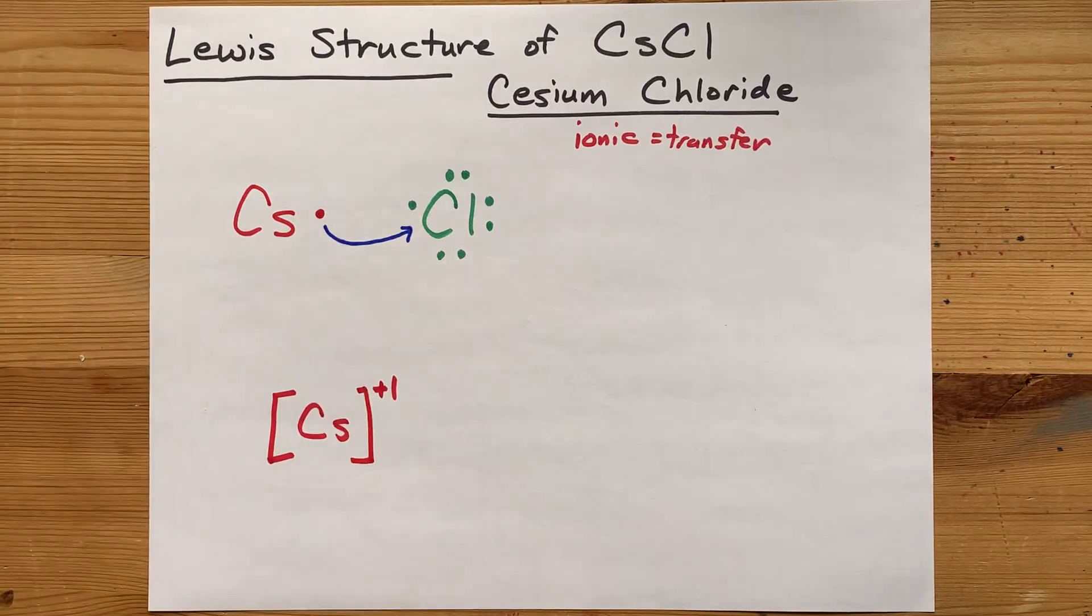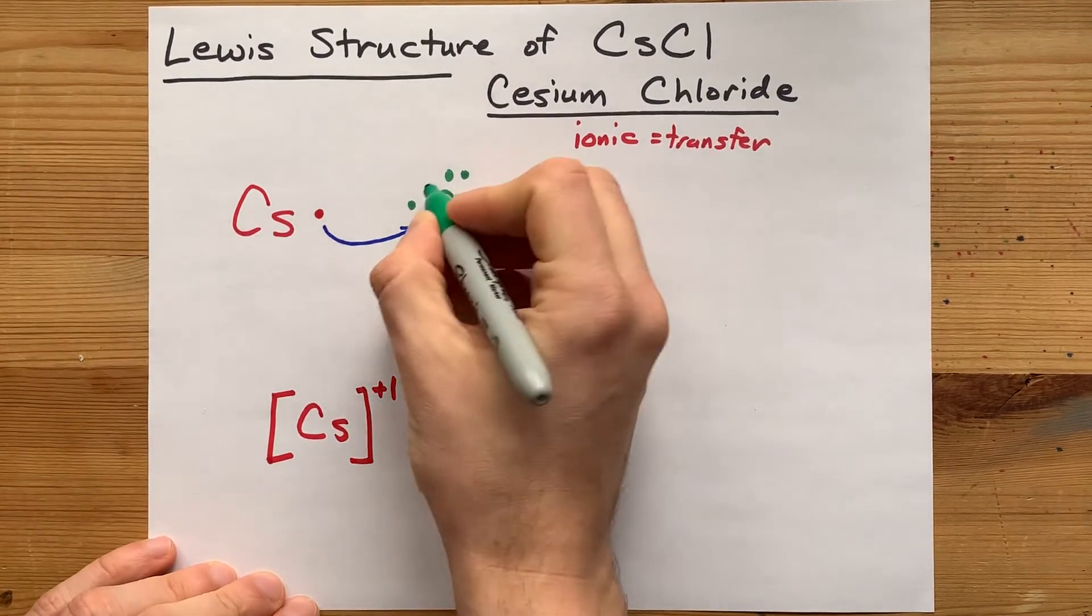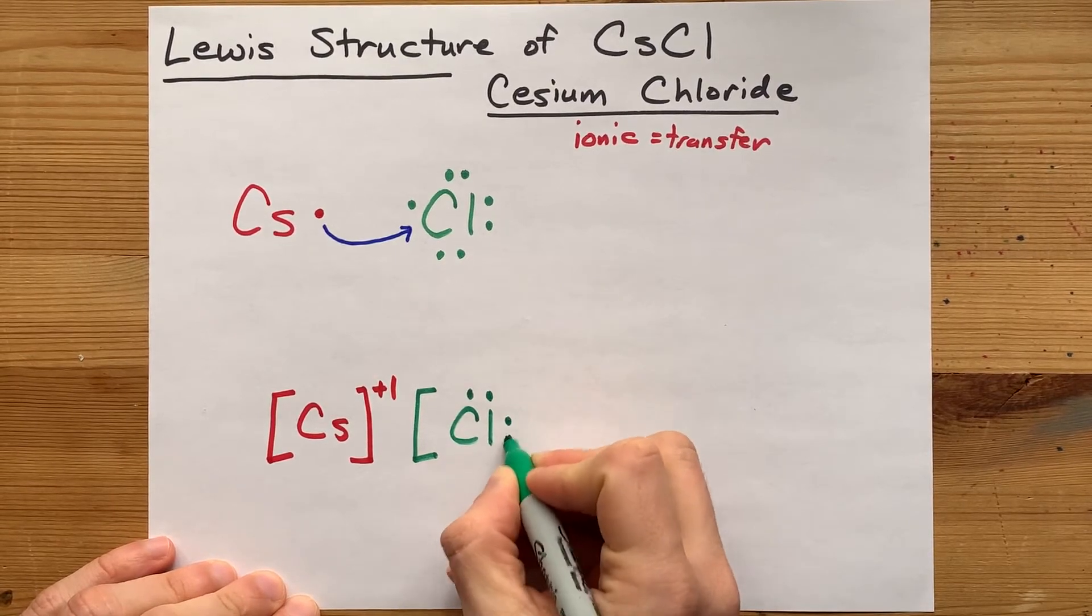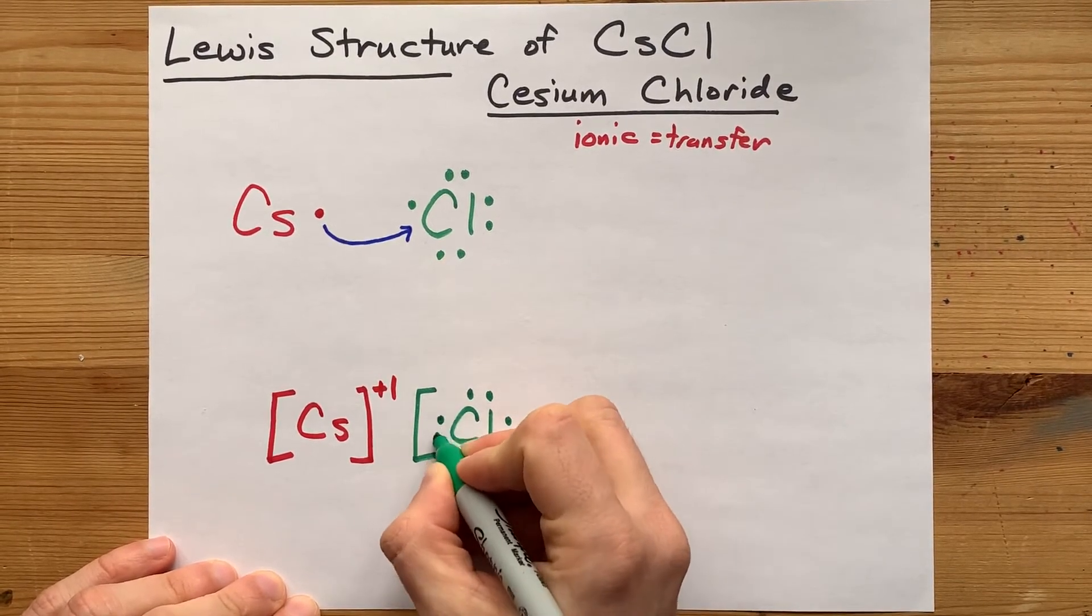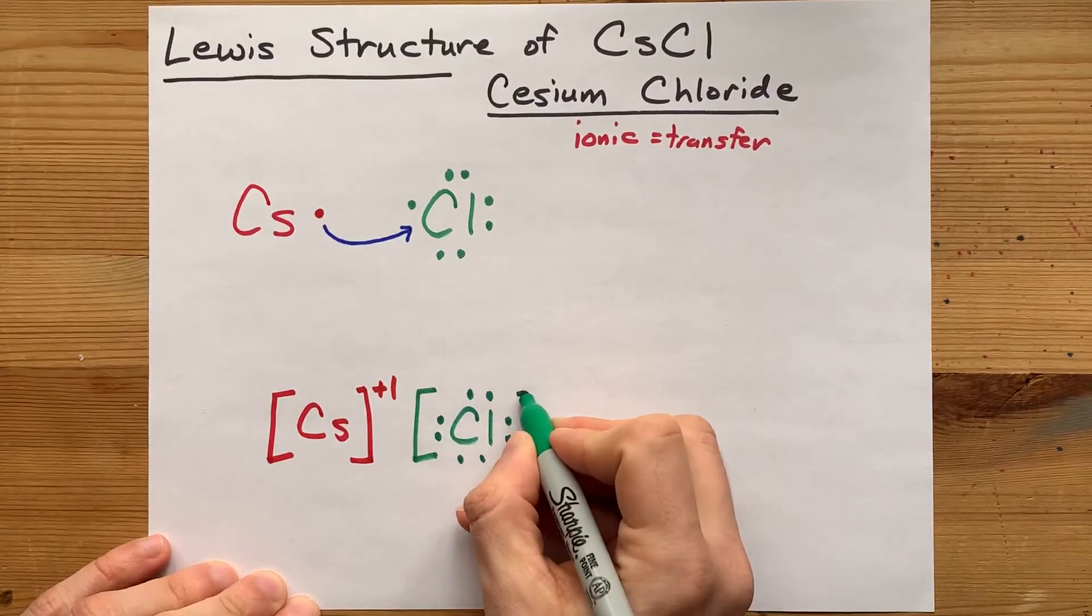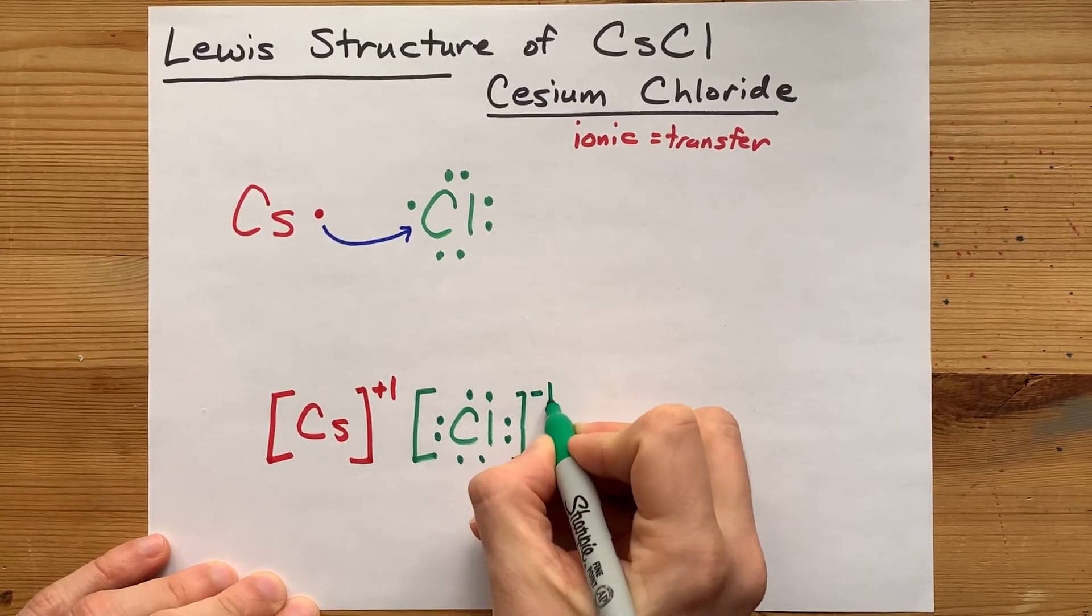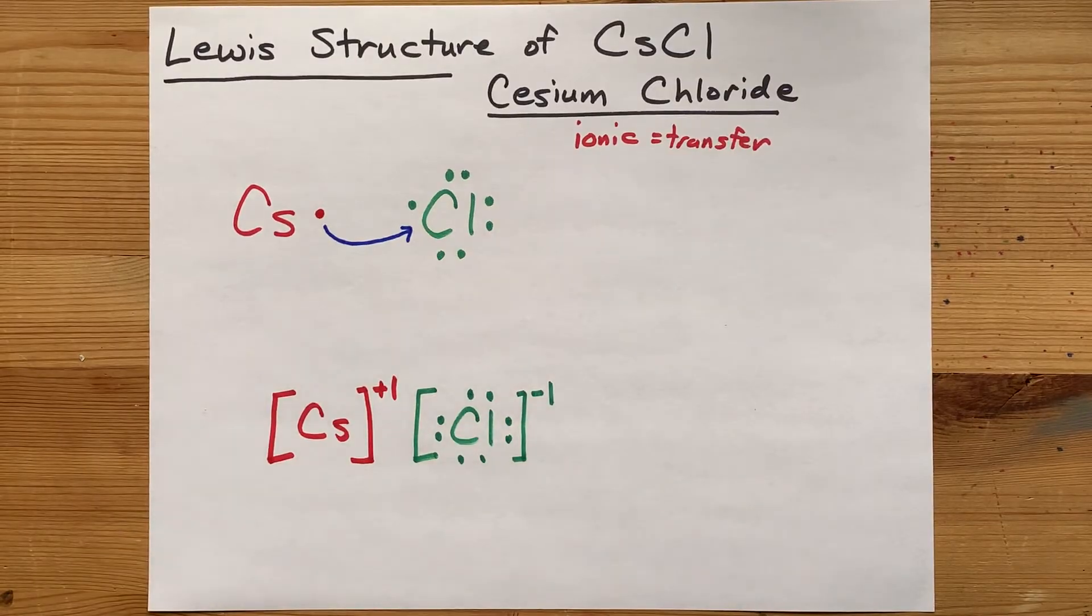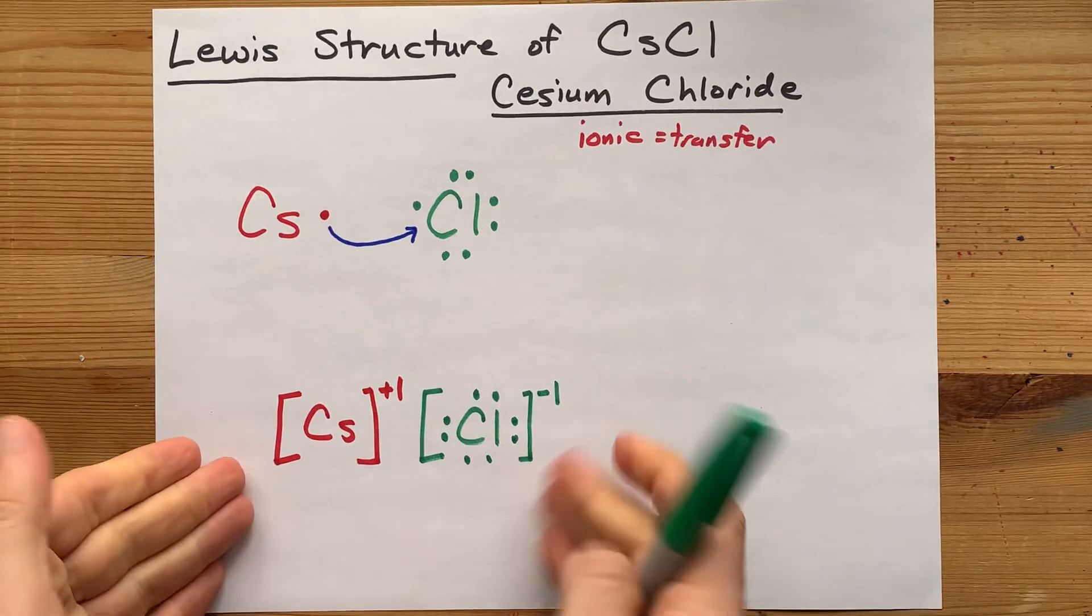The chlorine, on the other hand, had seven electrons and gained one more. That means it now has a full eight electrons, octet rule. And a minus one charge because that one extra electron brought a charge of minus one. This is the complete